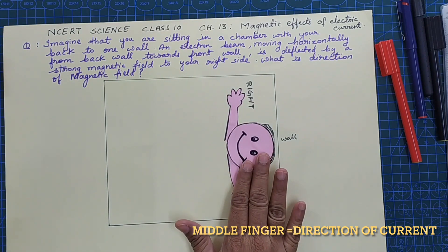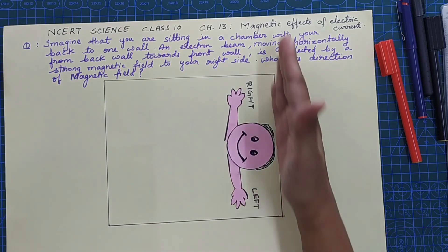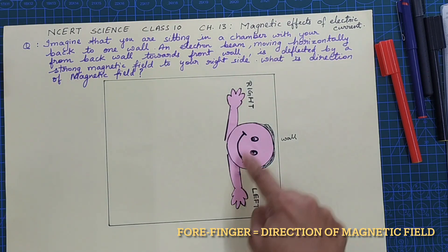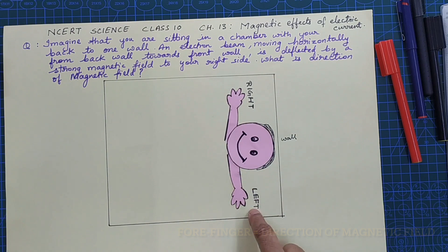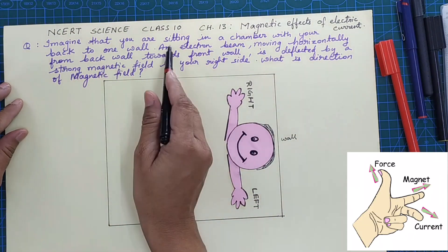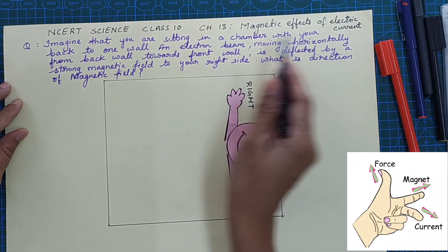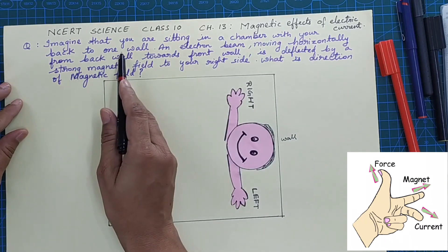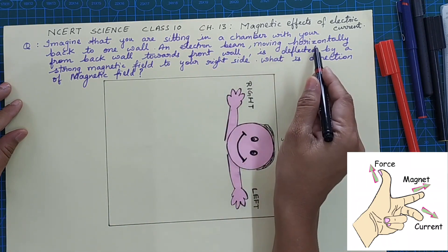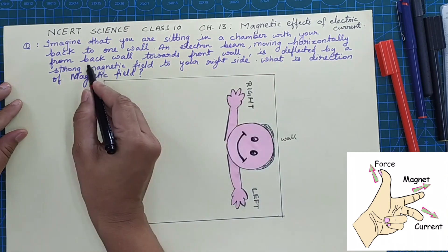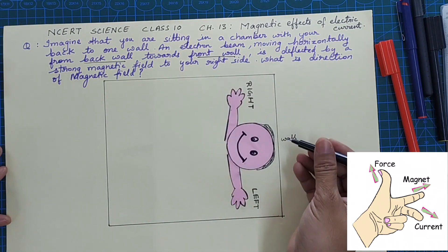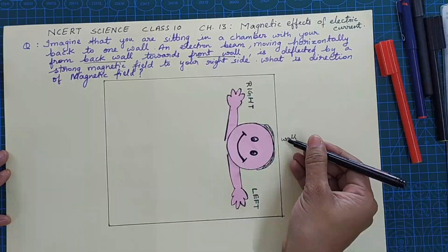Imagine a person sitting with his back to one of the walls. This person's right hand and left hand are identified. The electron beam is coming from the back wall and moving horizontally towards the front wall.